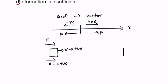But an object can also be traveling in the negative direction, and maybe we wanted to increase the velocity of this object. We simply apply force in the direction of the velocity, and the acceleration here will also be in the negative direction.